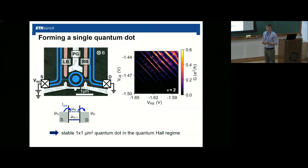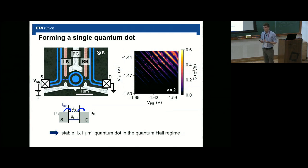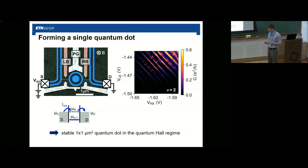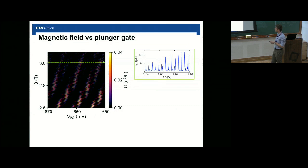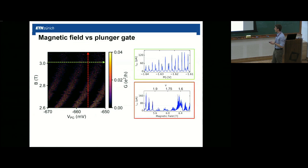Experimentally it is not easy to get nice measurements of quantum dots in the quantum Hall regime because you get a lot of localized states close to the quantum dot and in the barriers, leading to charge rearrangements visible in the measurement. Nevertheless, overall we have a very stable quantum dot. Fixing our barriers to fix the tunnel coupling to the leads, we look at conductance as a function of plunger gate voltage and magnetic field, seeing a very complex pattern with double peaks appearing along the plunger gate axis and groups of peaks appearing along the magnetic field axis.